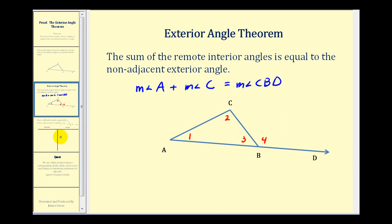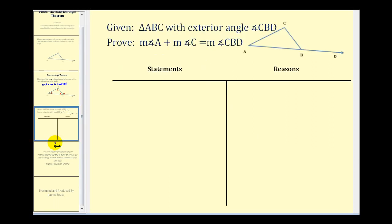Let's go ahead and set it up. We're given triangle ABC with exterior angle CBD. We want to prove the measure of angle A plus the measure of angle C is equal to the measure of angle CBD.